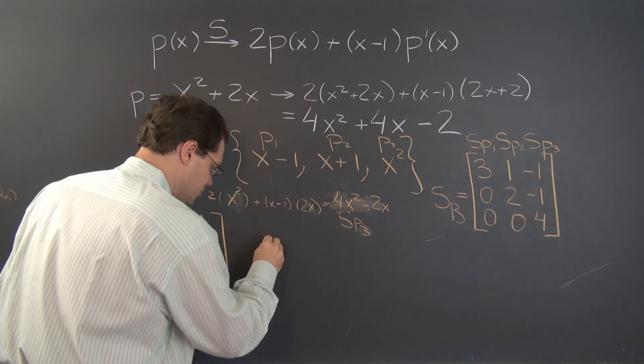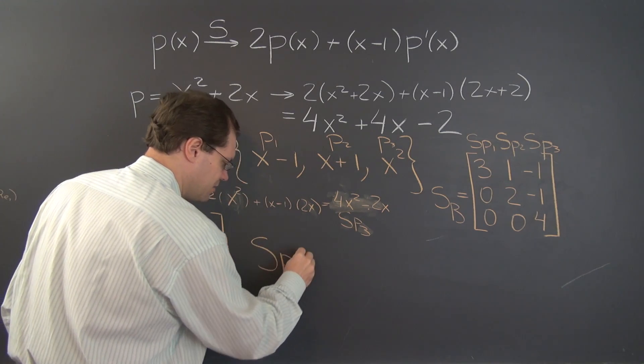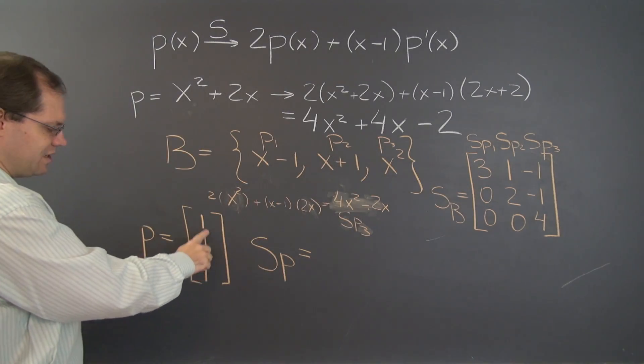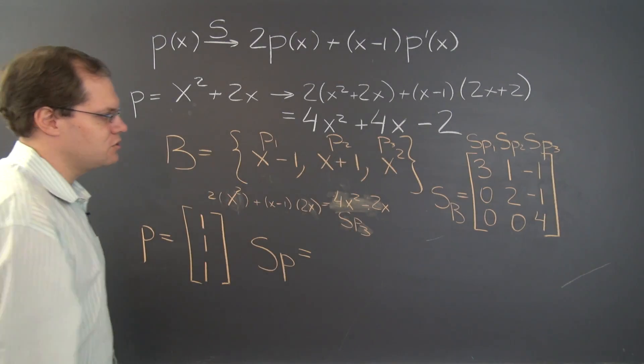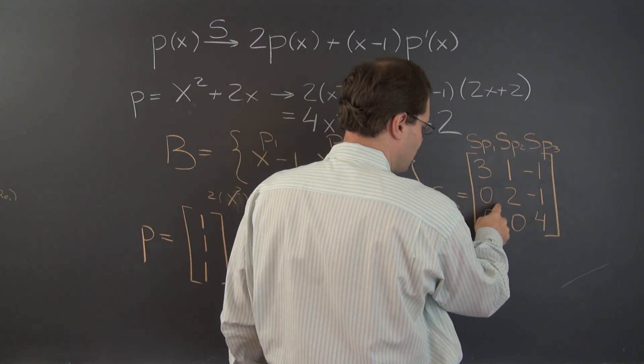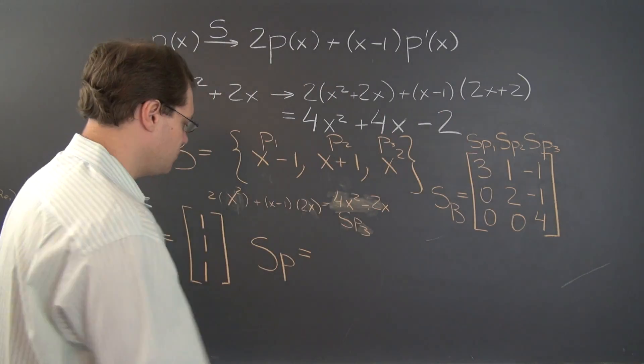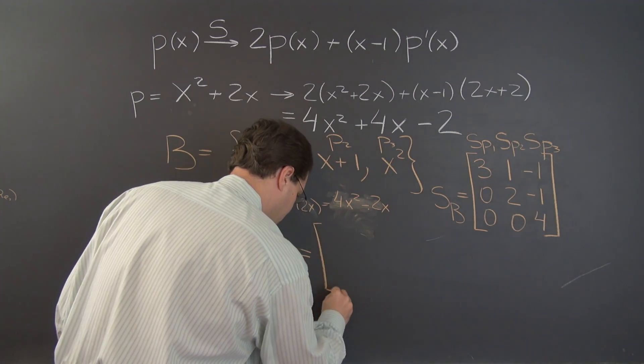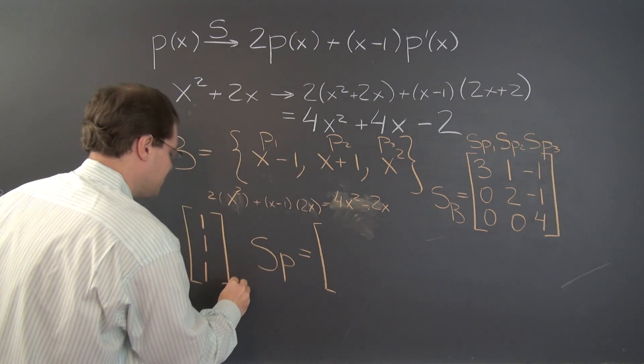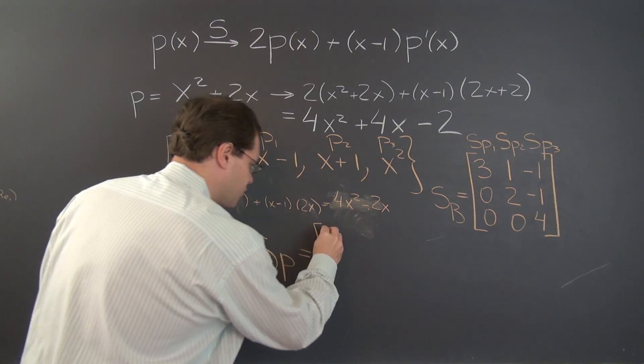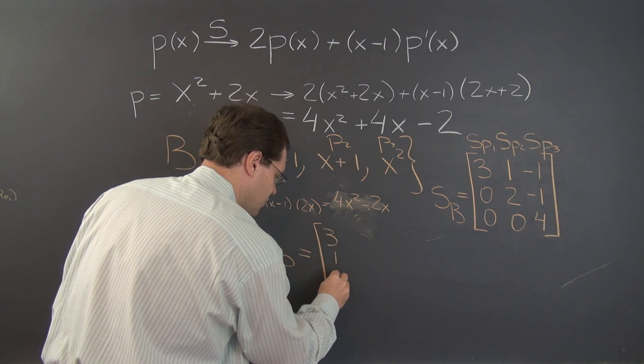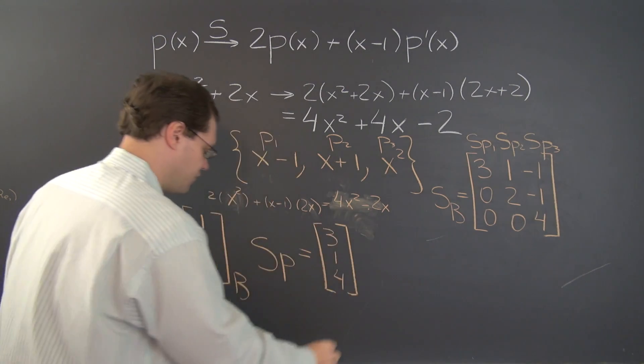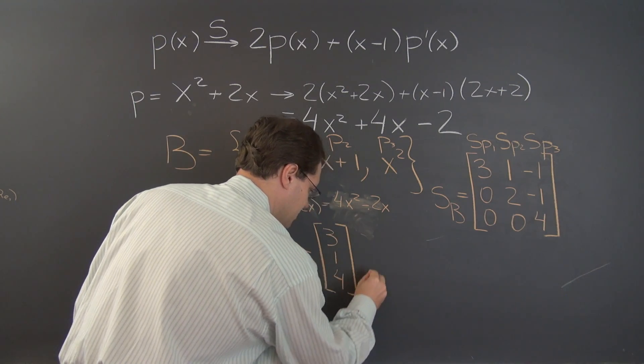And so in order to evaluate S of P we need to multiply this matrix by 1, 1, 1. And of course this will sum up each of the rows. So we'll have 3, 1, 4. So this is with respect to the basis B. 3, 1, 4, also with respect to the basis B.